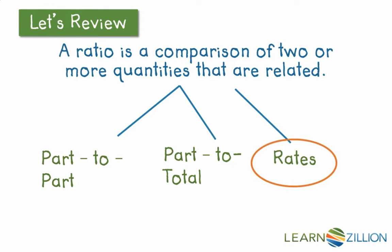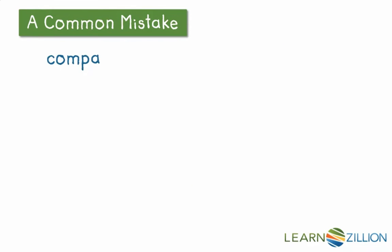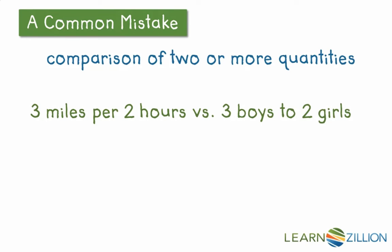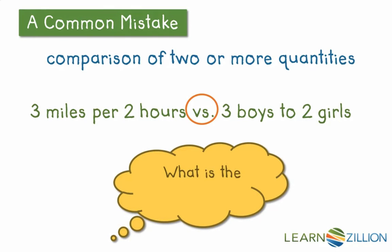Today, we're finally going to start talking about that third comparison. What is a rate and why is it part of the ratio family? A common mistake is when you focus on just comparing two or more quantities as the definition of a ratio — you may see a rate such as three miles per two hours and a ratio such as three boys to two girls, and they both look like they're comparing two quantities. So why is one a rate and one a ratio? What is the key difference?